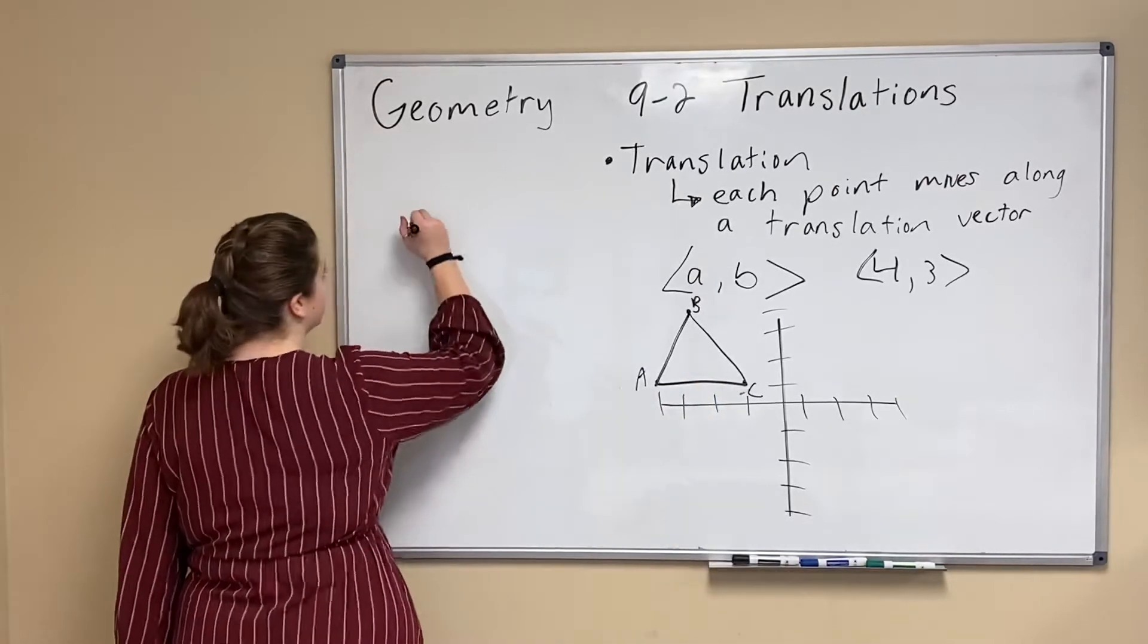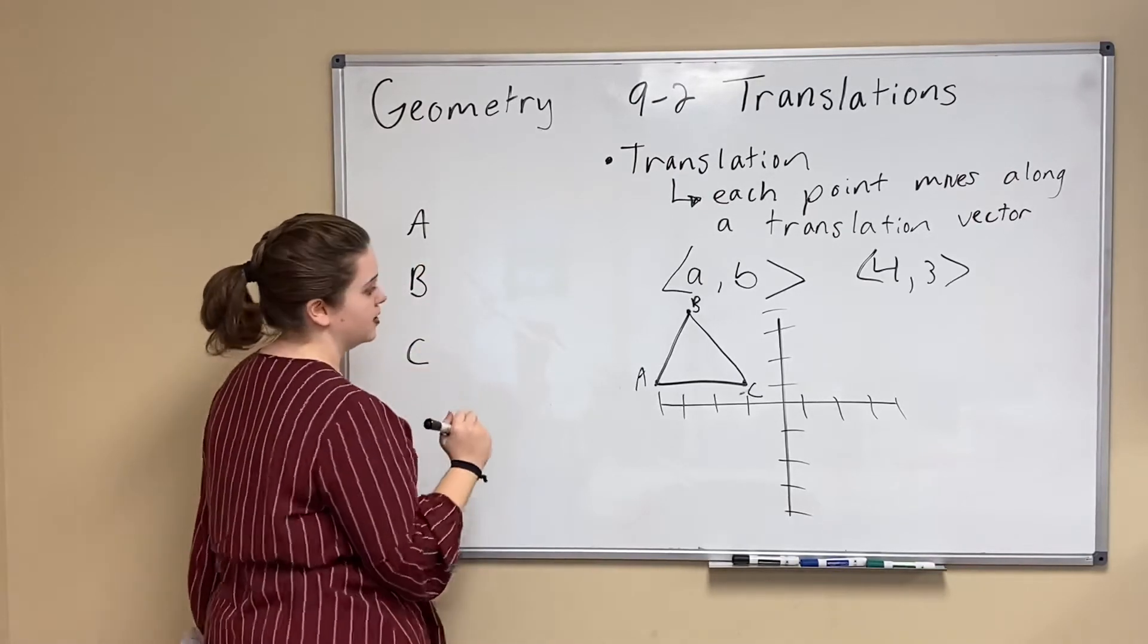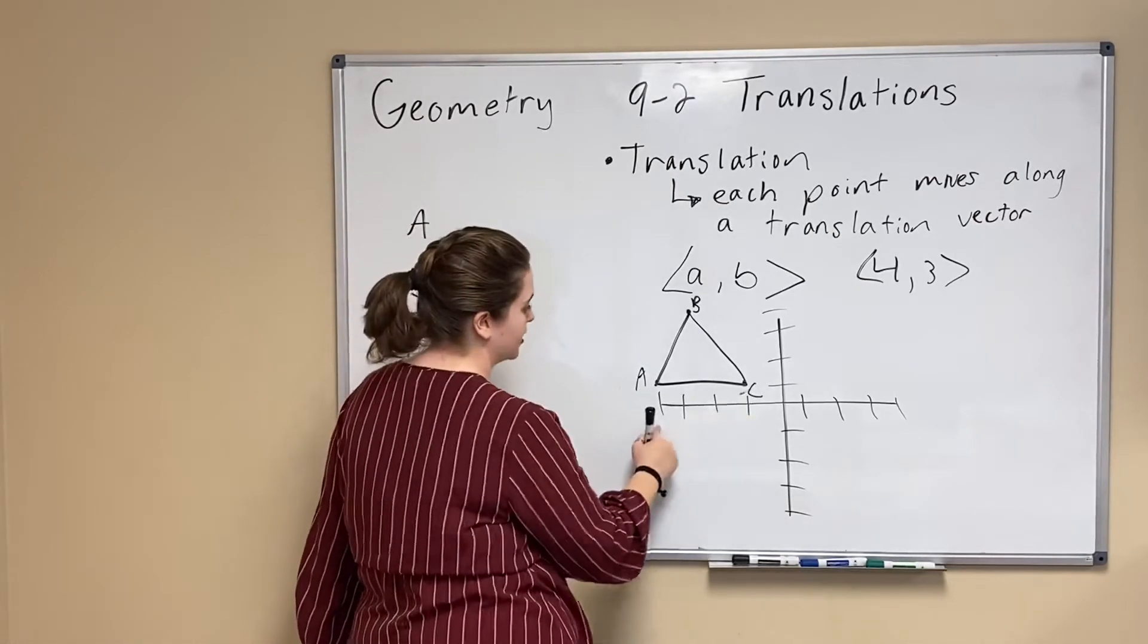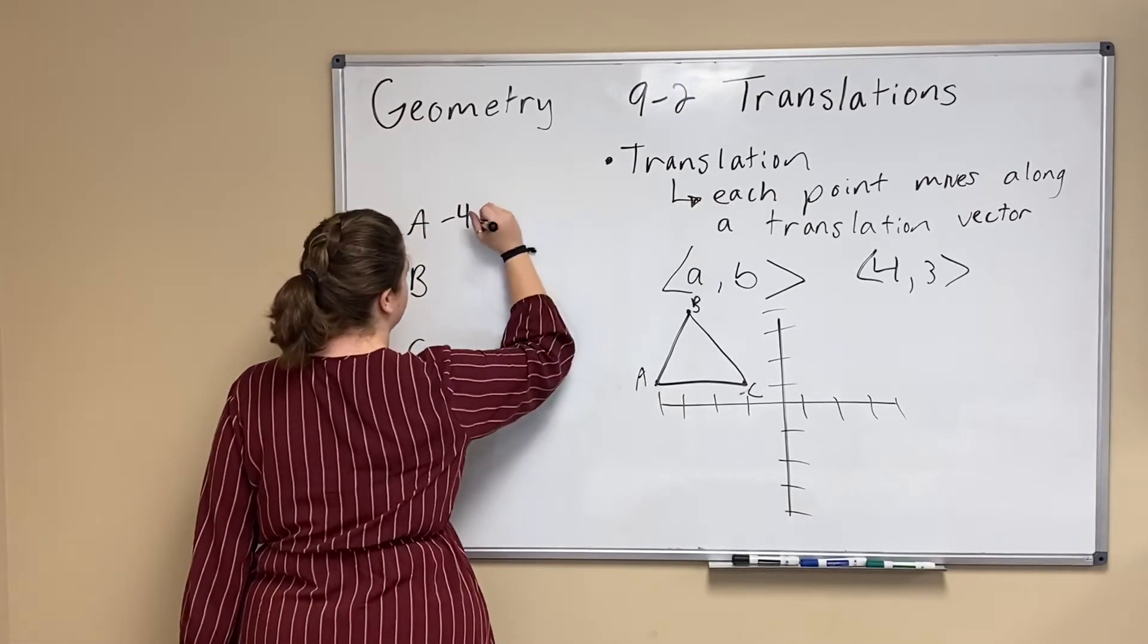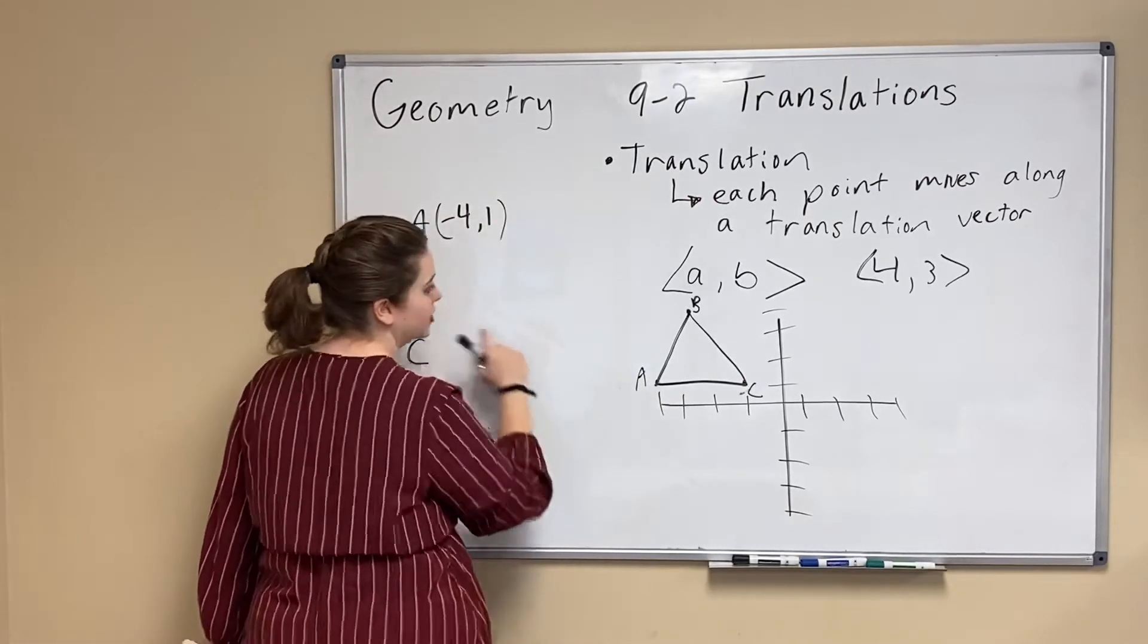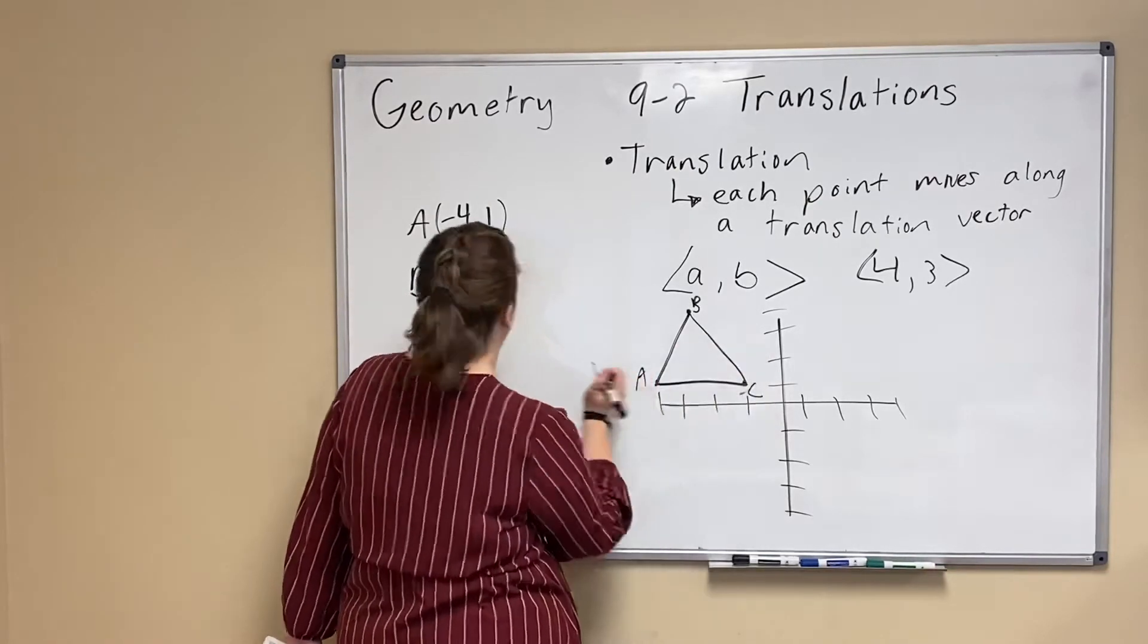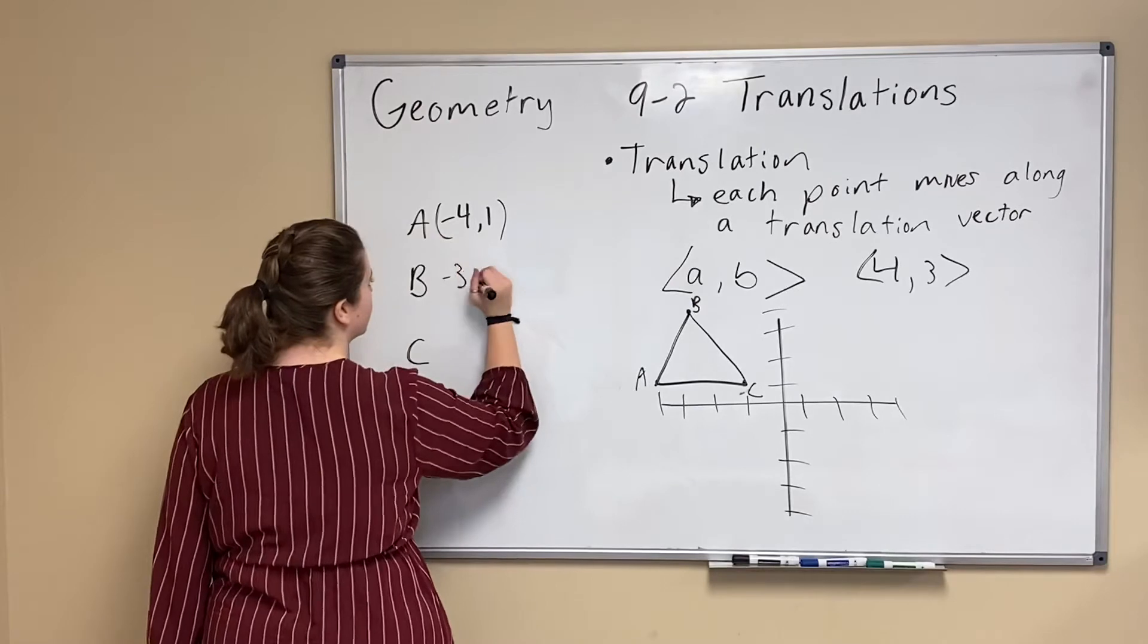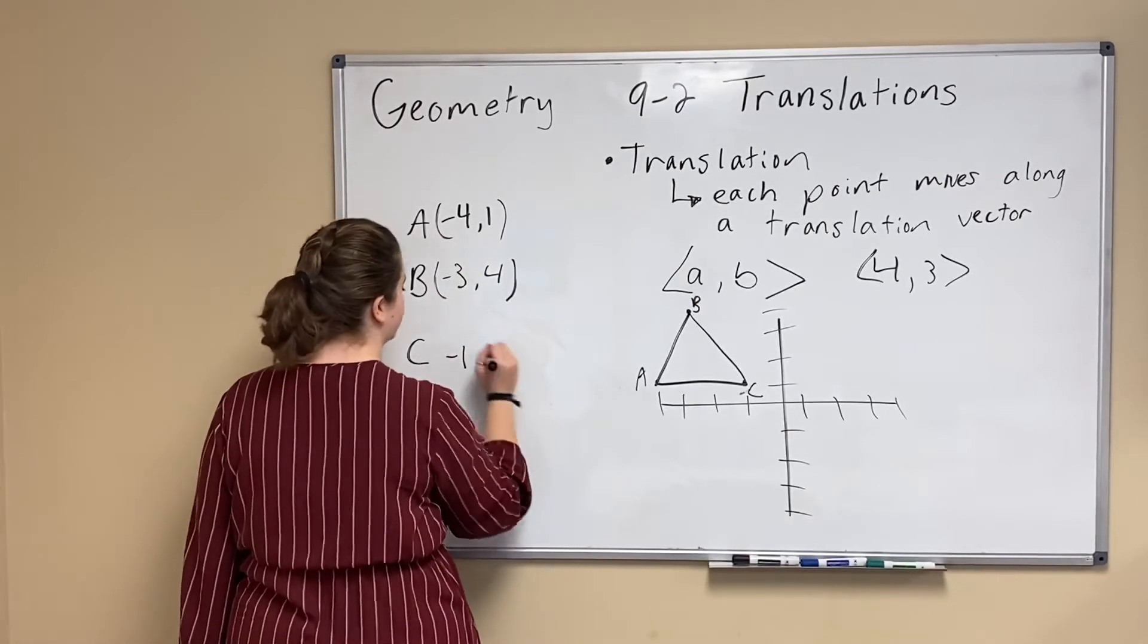So I'm going to find A, B, and C. A looks like (-4, 1). B looks like (-3, 4). And C looks like (-1, 1).